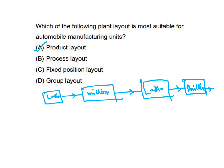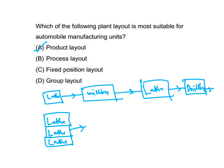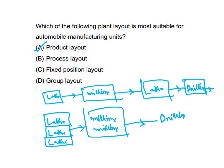In process layout, the same processes or same machines are grouped together and placed in the same area. So all lathe machines are placed together in one area, then all milling machines together, then all drilling machines together. That is process layout.